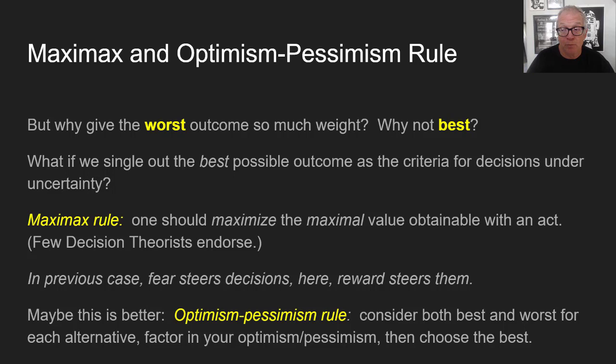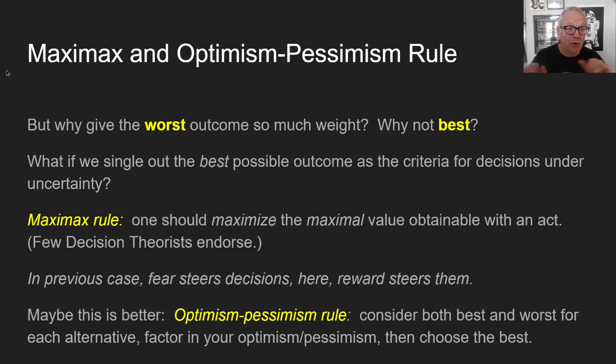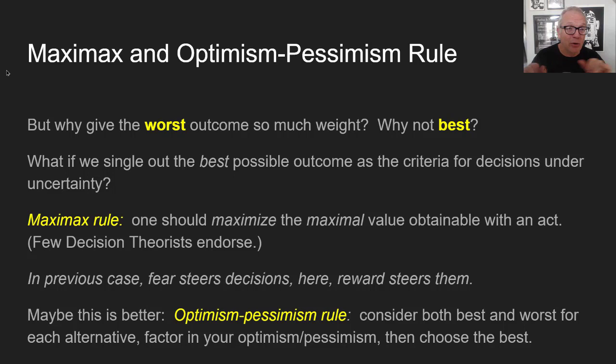Peterson has an optimism-pessimism rule that considers both best and worst outcomes for each alternative, factors in your degree of optimism or pessimism, and then chooses the best. He's trying to come up with a hybrid that puts some weight on positives and some on negatives. The problem is that in decisions under ignorance we don't have probability weightings, so we don't know how to proportion those weighted averages. We'll come back to that in the next lecture.